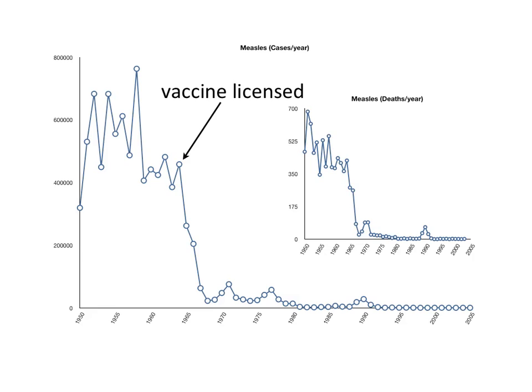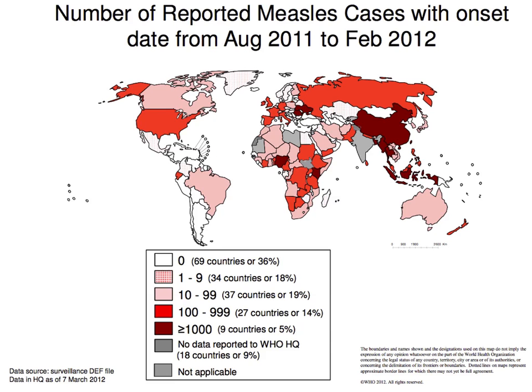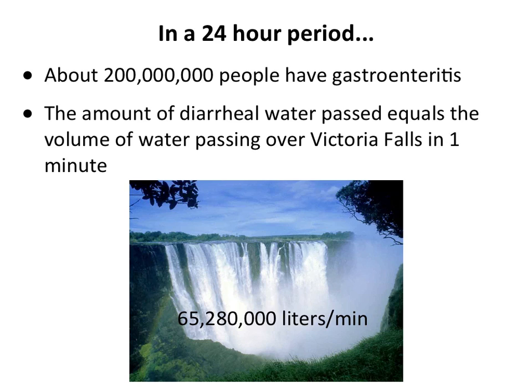When the vaccine was licensed in the 1960s, there was a precipitous drop in infections and measles deaths, going from around 700 deaths to nearly none. The only measles we now have is in unvaccinated children and from imported virus. Globally, nine countries still have more than 1,000 measles cases per year. The WHO is currently stretched thin with the polio eradication program, but once that's done, measles eradication may be the next goal.